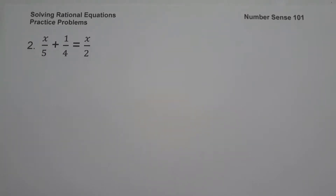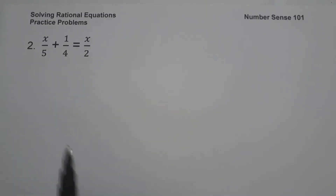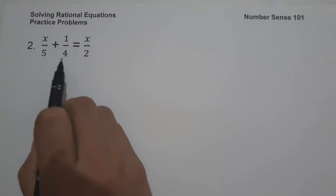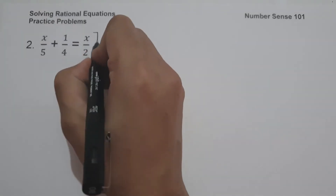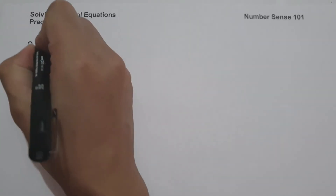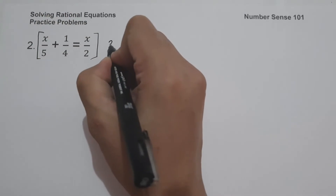On example number 2, we have x over 5 plus 1 over 4 equals x over 2. Just like in example number 1, let us eliminate the denominators by multiplying each term of the equation by the least common denominator. The LCM of 4, 5, and 2 is 20, so let us multiply the whole equation by 20.